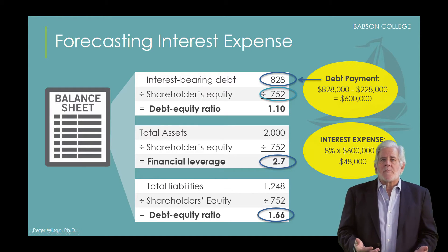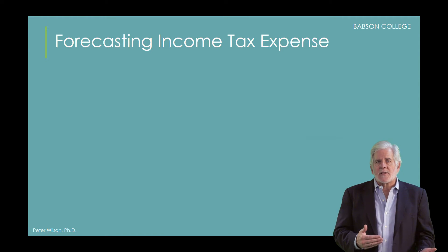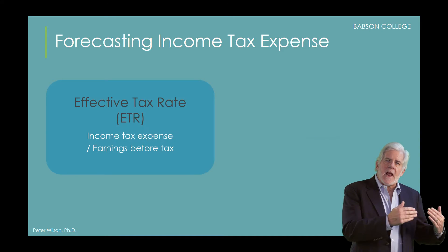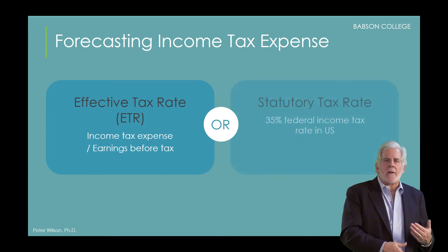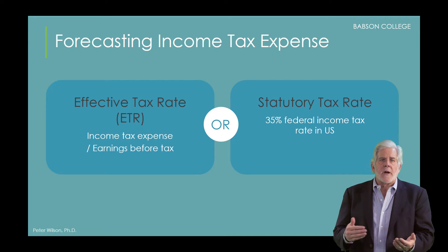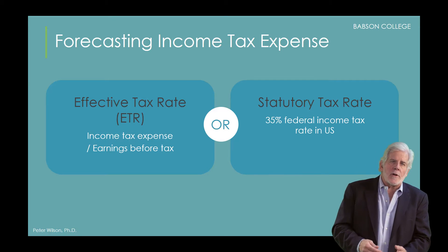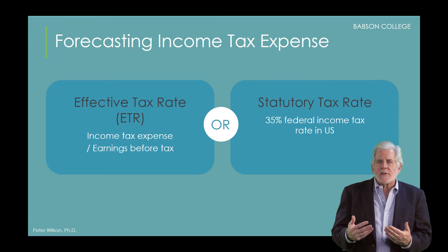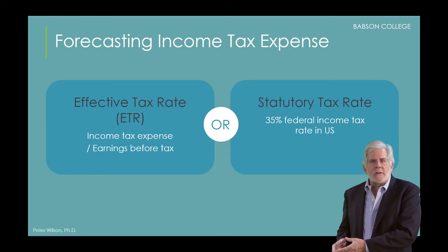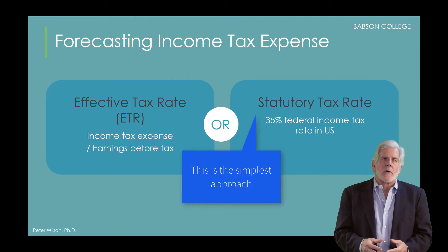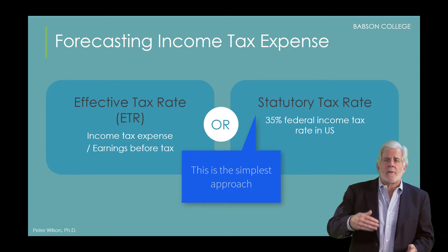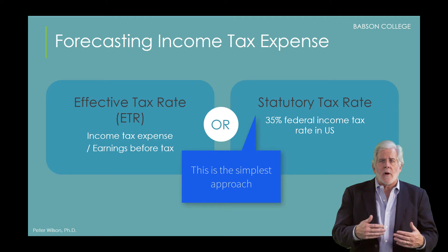In projecting income tax expense, the main decision is whether to use an estimate of the firm's effective tax rate or the statutory tax rate. The effective tax rate is an average tax rate that takes into account the various tax planning and tax reduction strategies employed by the firm, and is calculated by dividing income tax expense by earnings before income taxes. While there are differences of opinion about which to use, using the statutory rate is the simplest approach and should work fine in most circumstances. In the United States, the federal tax rate tops out at 35%, which is the rate you'll often see in a forecast.